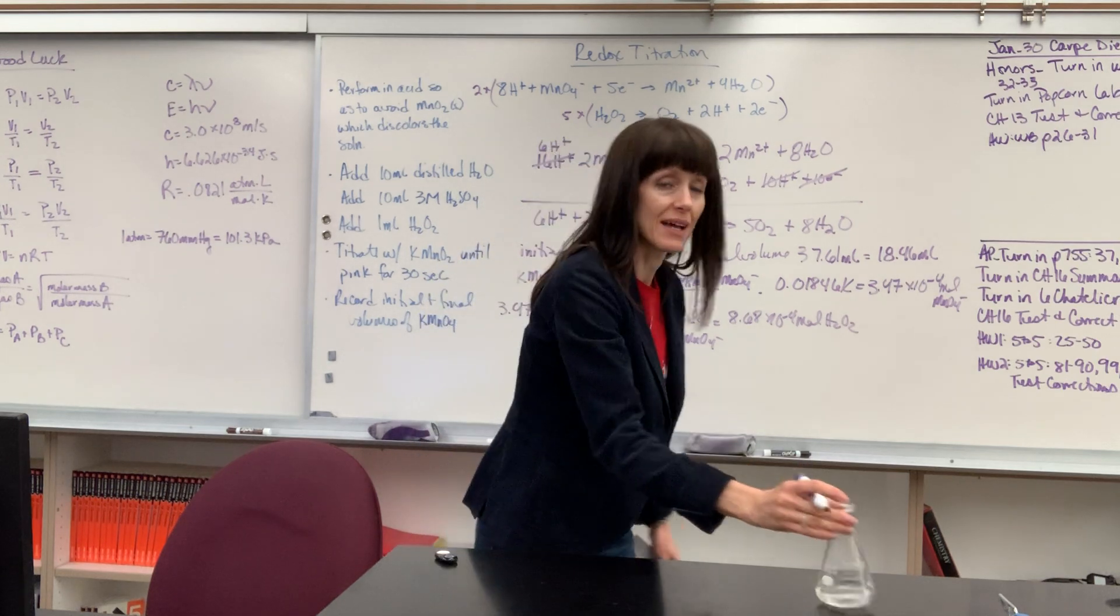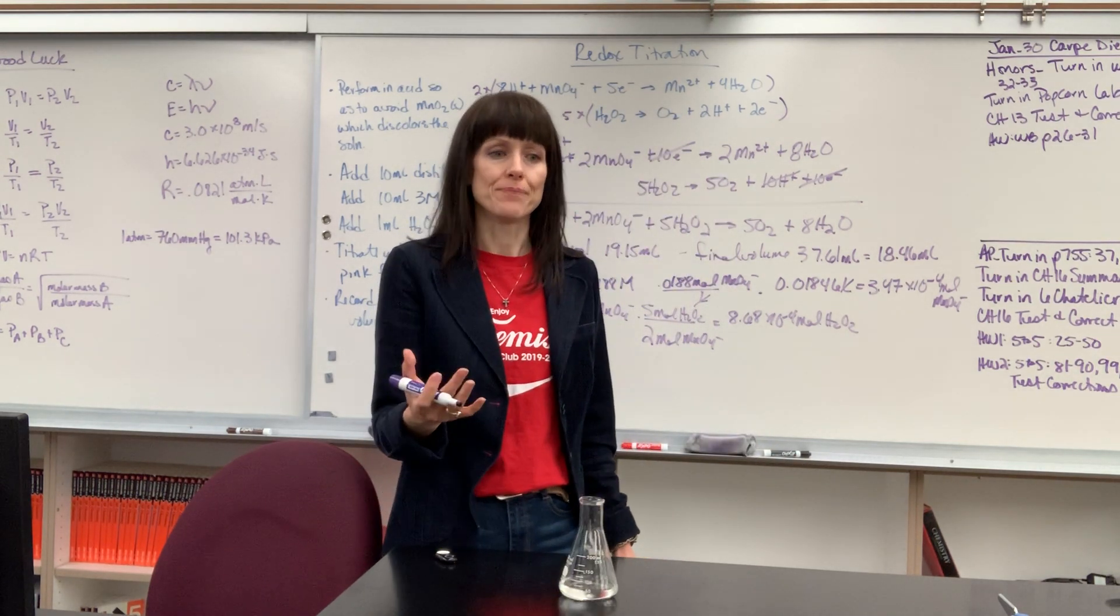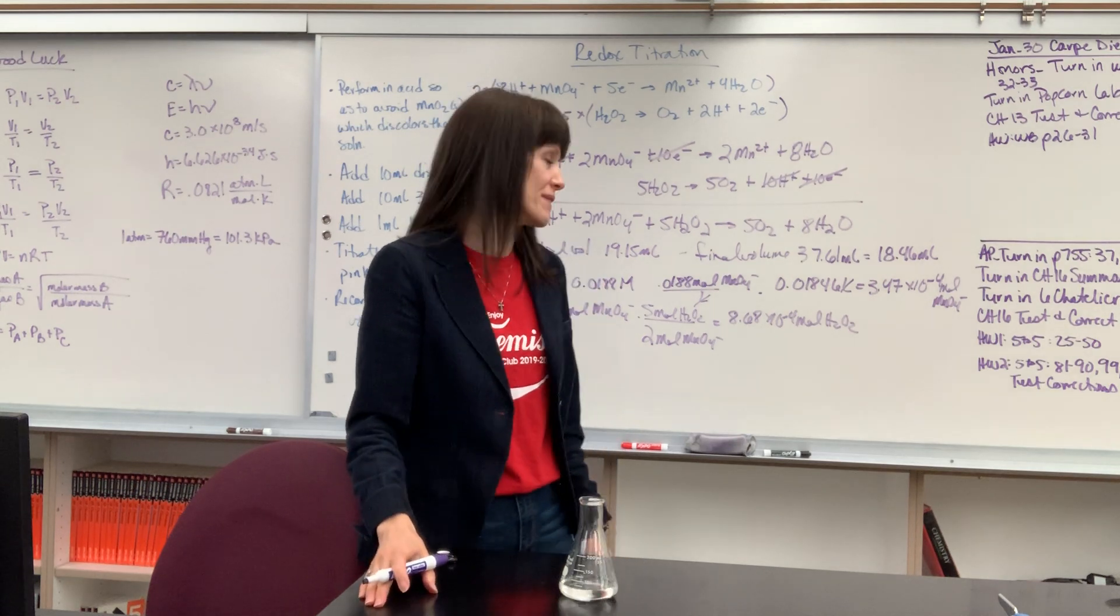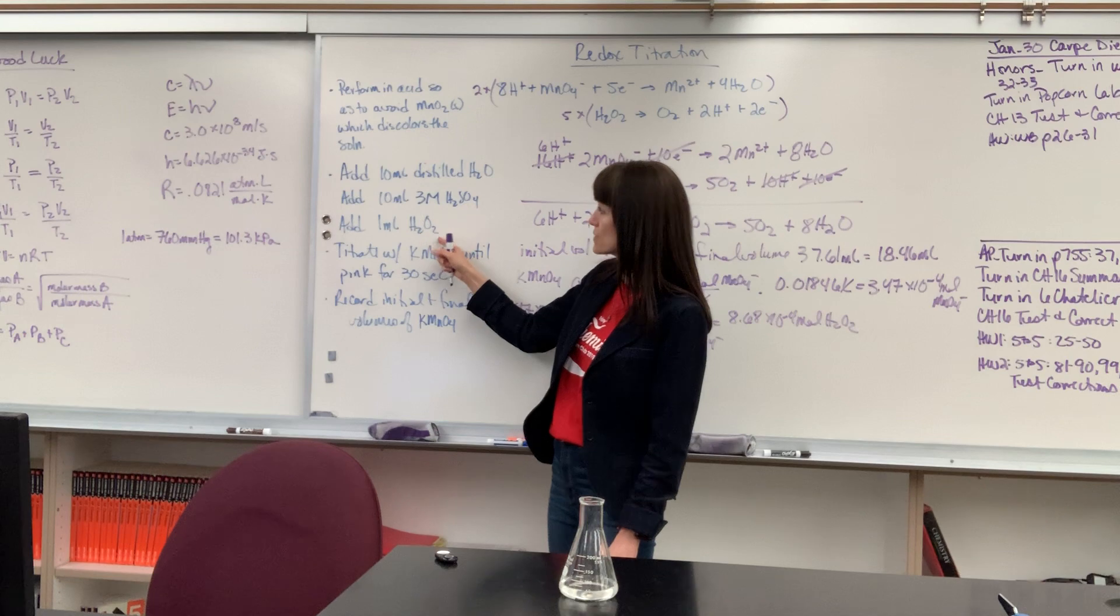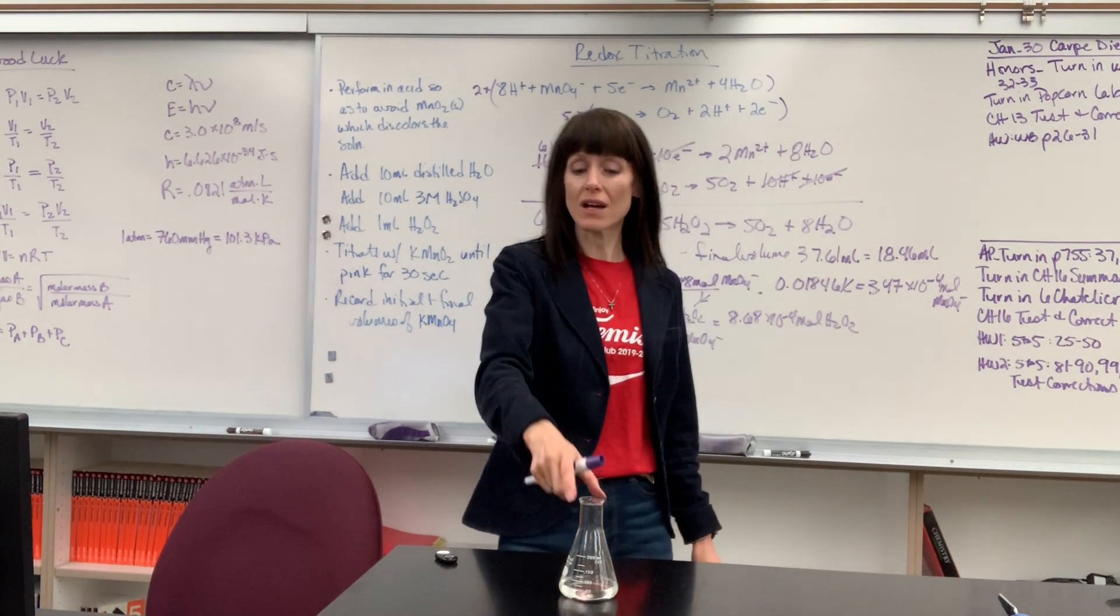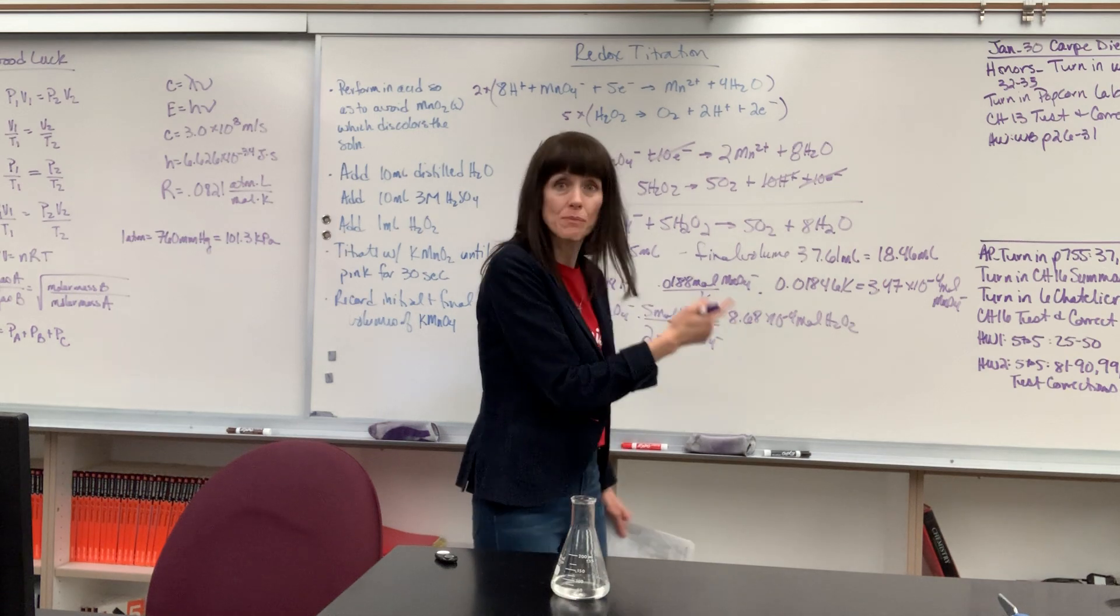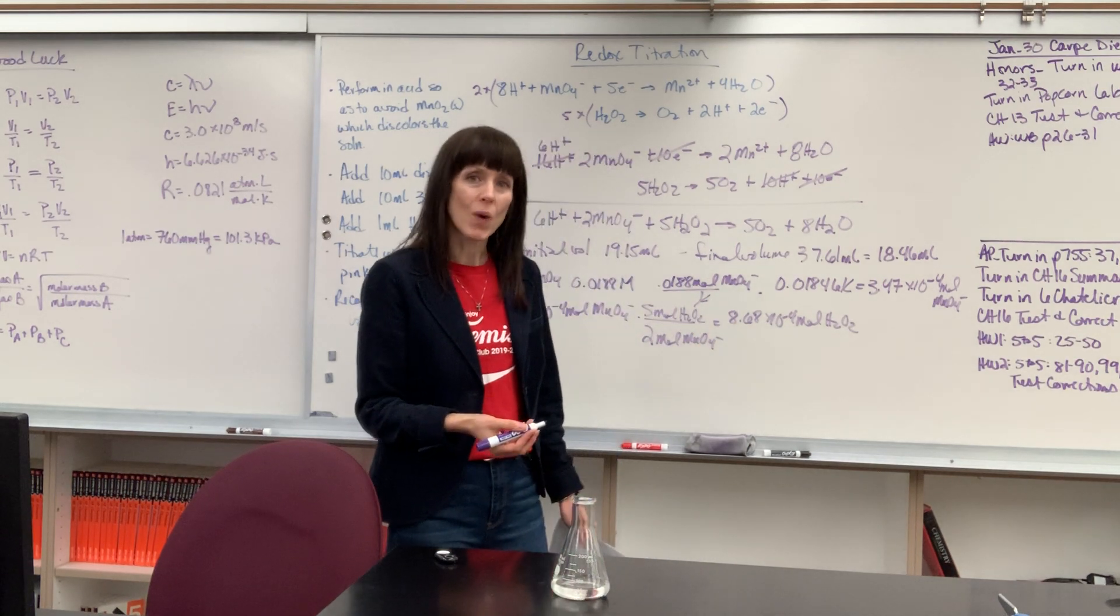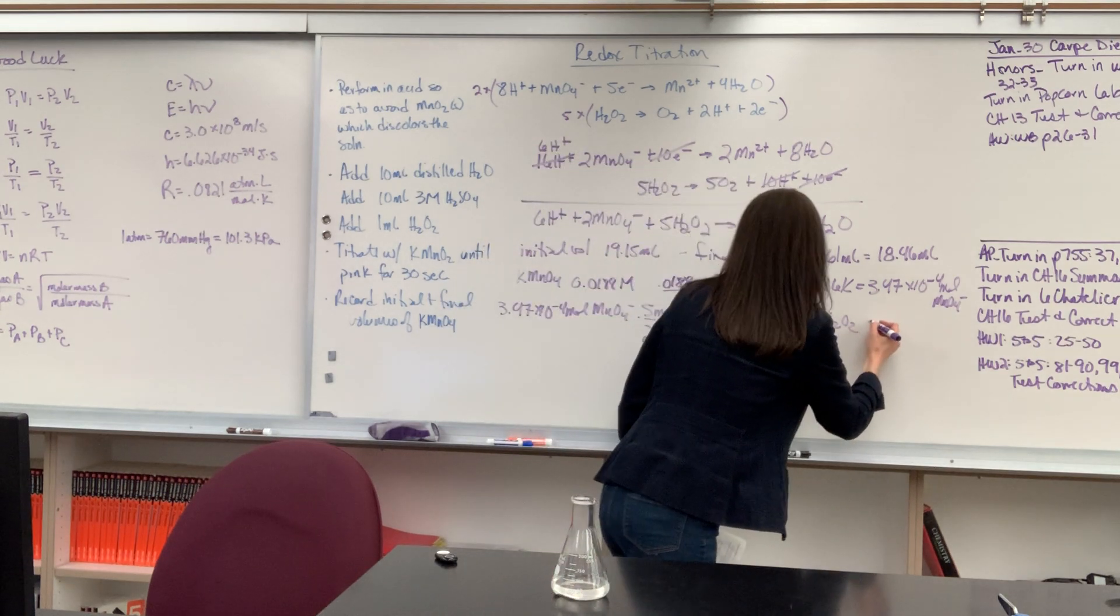So we just found the exact moles inside of here. Now a couple of pieces of information that we could derive from this. I know that I used 1 mil. Remember, over here from the last video, we added 1 mil of hydrogen peroxide to this. So I could divide that by 0.001. I could divide it by 0.001 liters.